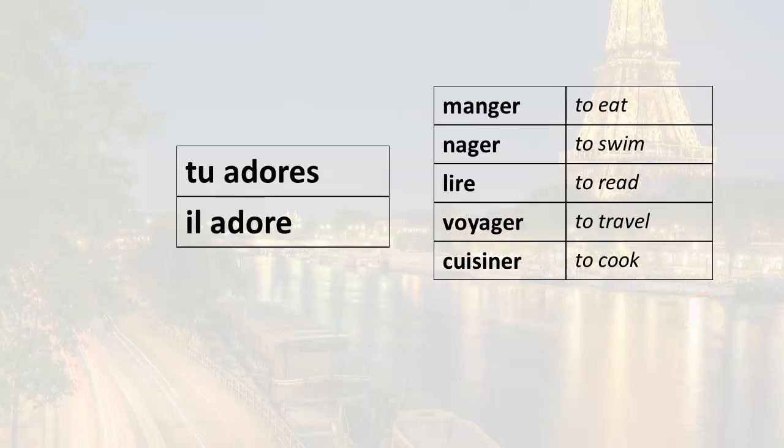Now remember, if you want to make a statement, you simply use your subject pronoun and the verb form followed by an infinitive in this case. So if I want to say you love to eat, tu adores manger.